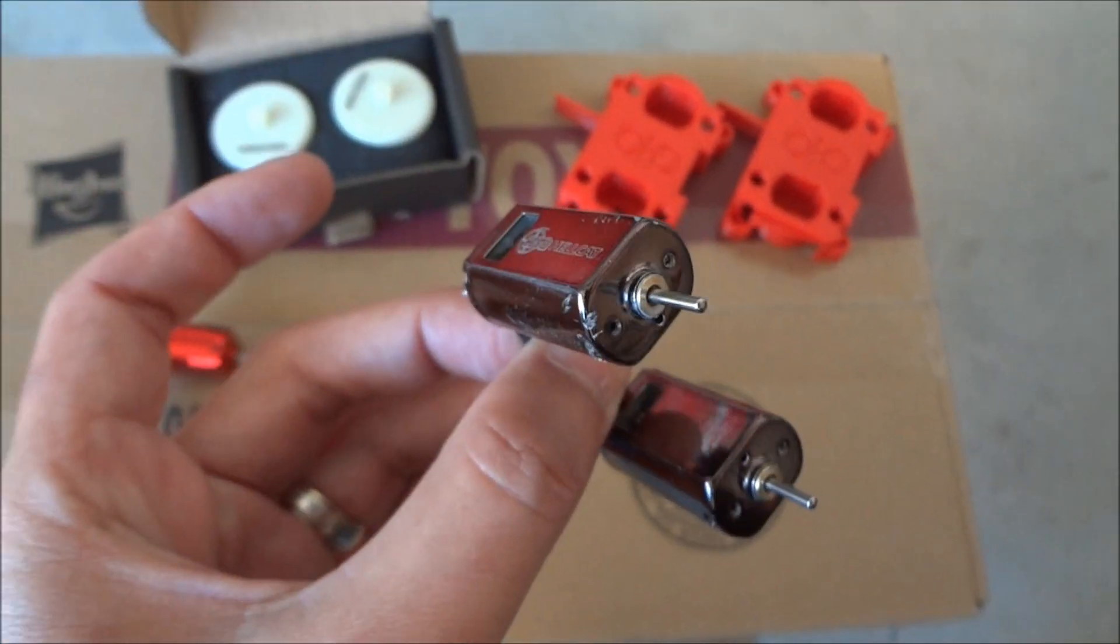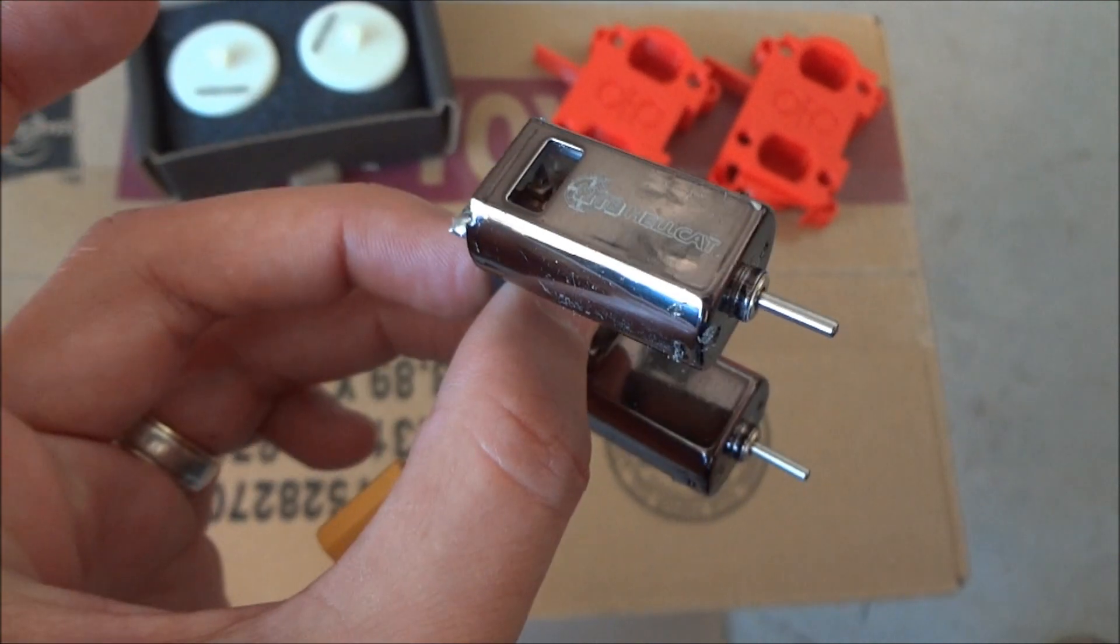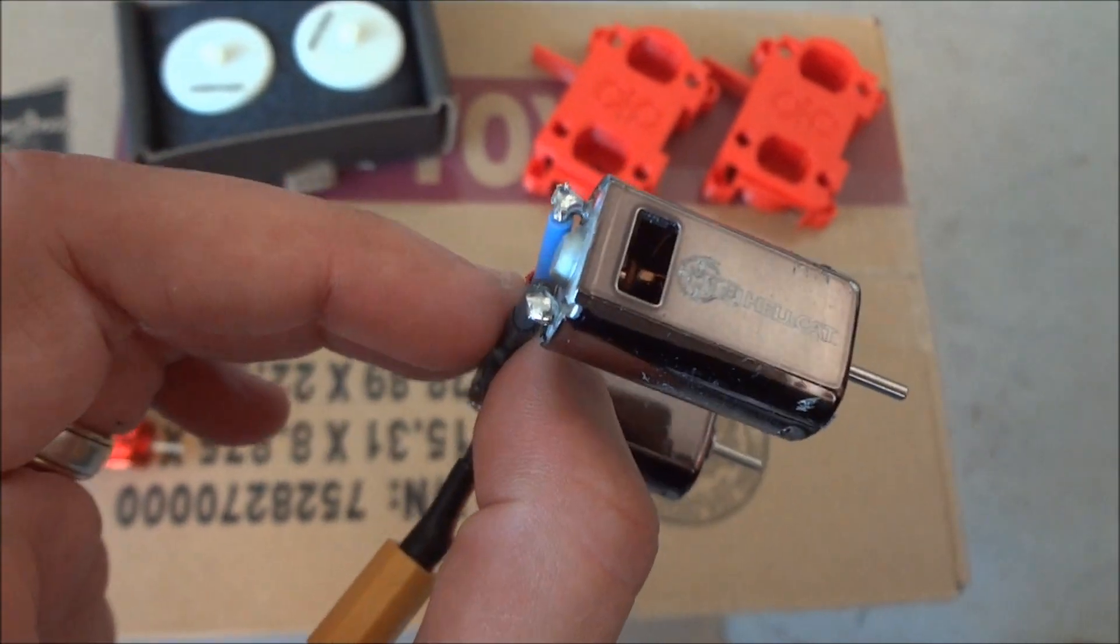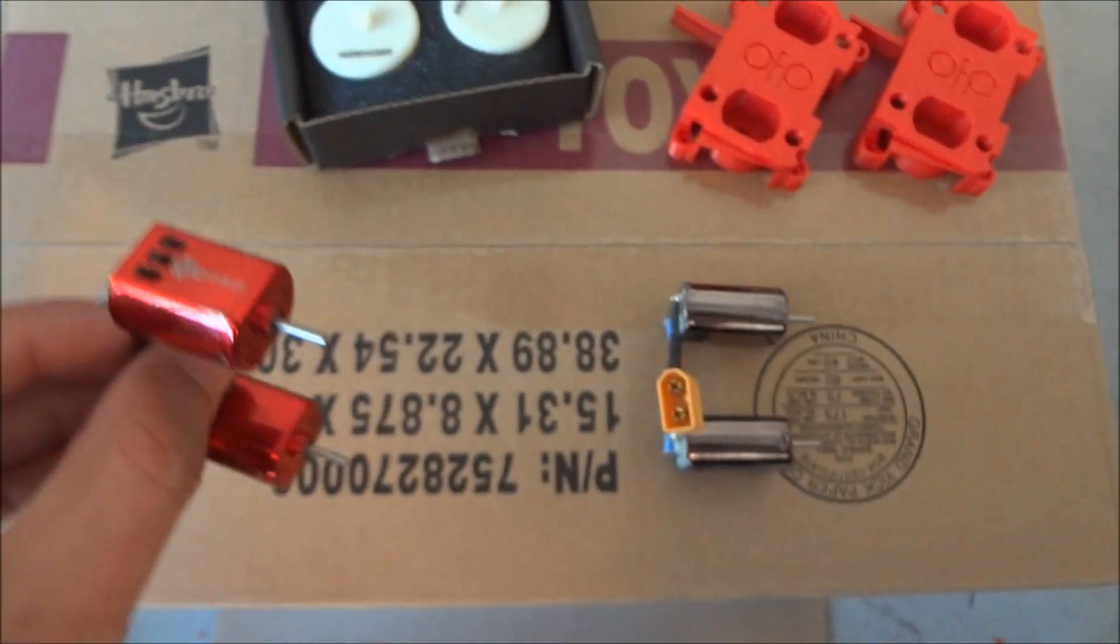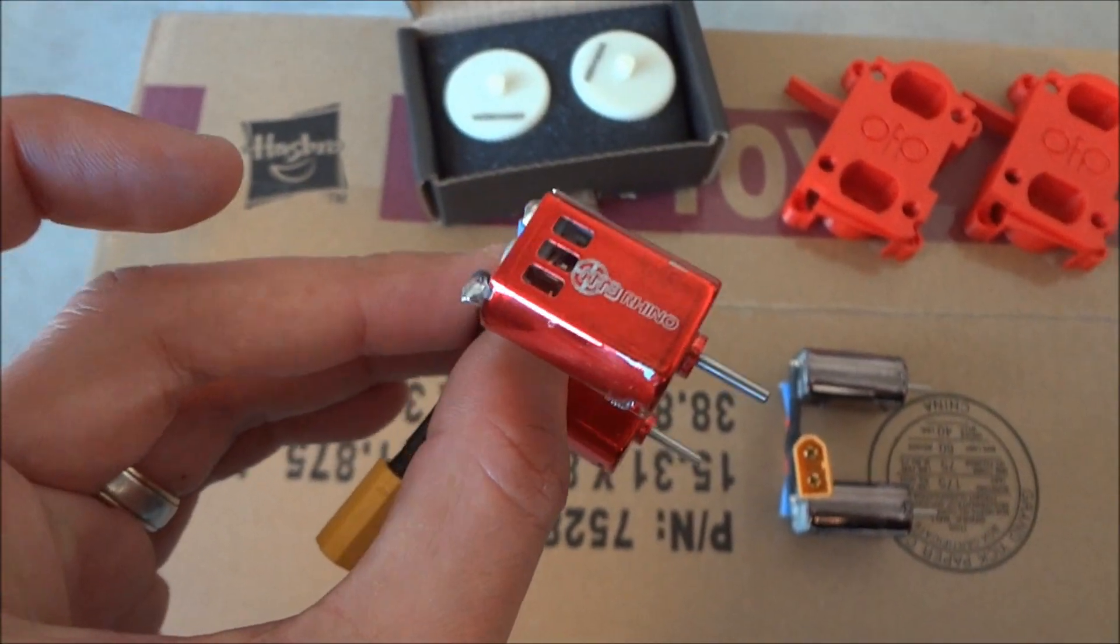Special Neo magnets. These have got ball bearings. The specifications are supposed to be insane. Some massive torque from these Hellcats. Similar with the Neo Rhinos, obviously 130 motor.